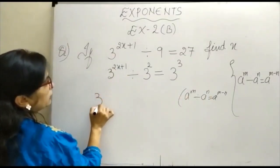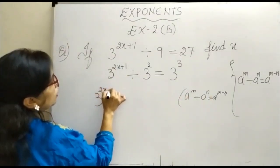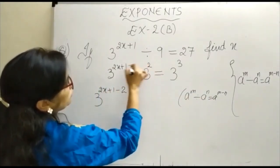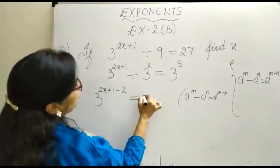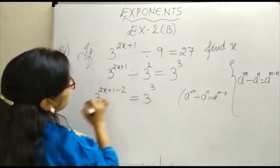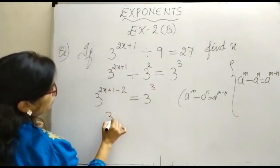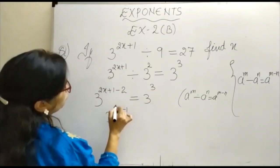So this becomes 3 to the power (2x plus 1 minus 2), which is 3 to the power (2x minus 1), equal to 3 to the power 3.